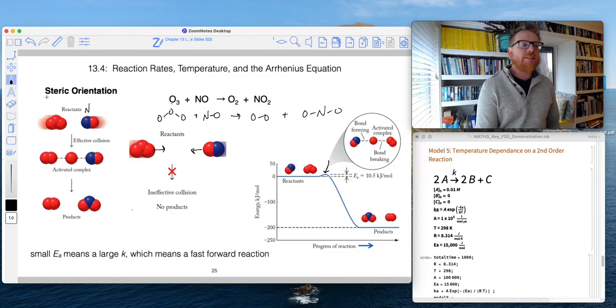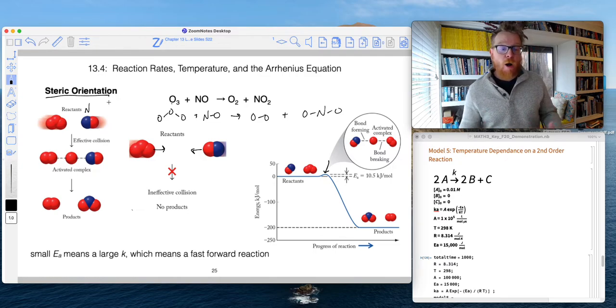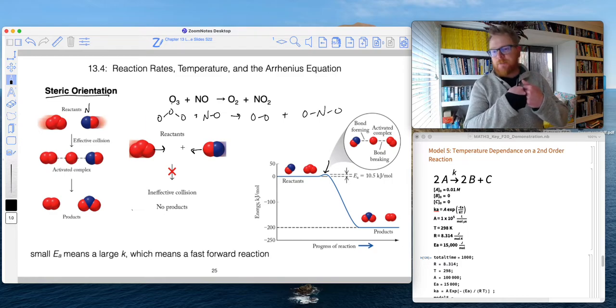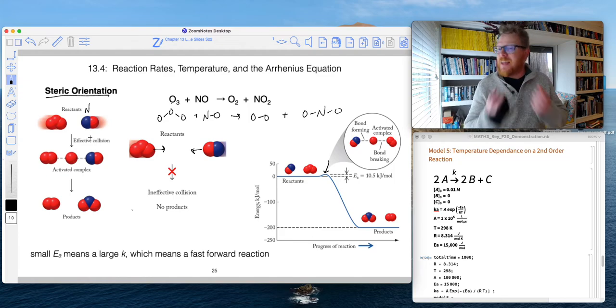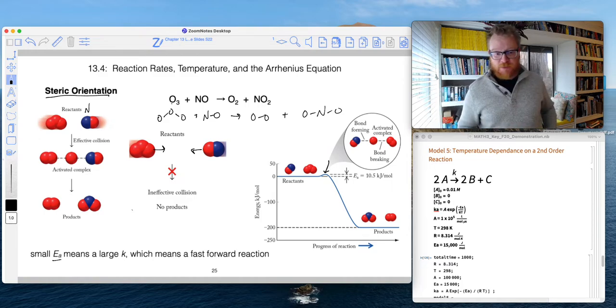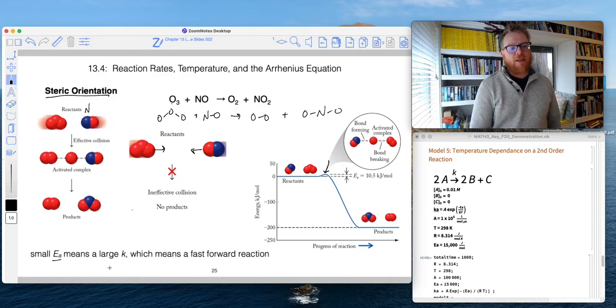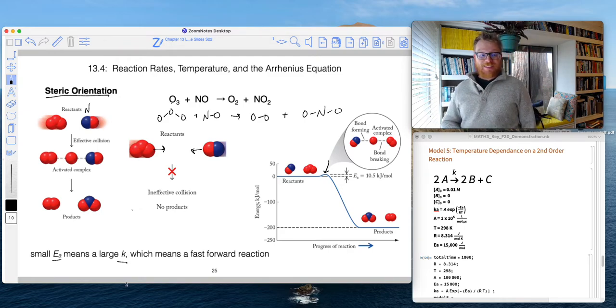So with respect to steric orientation, generally when we have very small molecules, like O3 and NO, they're going to find that sweet spot quite easily because the molecules are very small. And so that means for very small molecules, they typically have a small activation energy because they're able to find that sweet spot easily. A small EA means a large K, which means the reaction proceeds quickly.